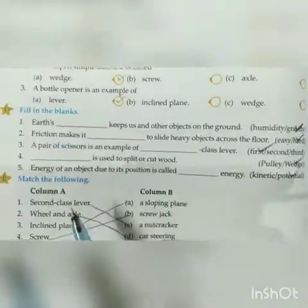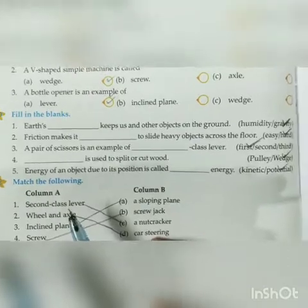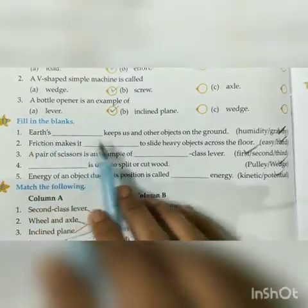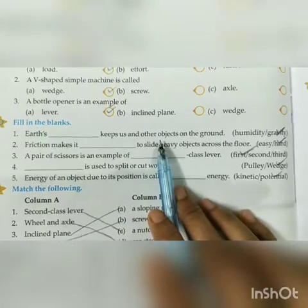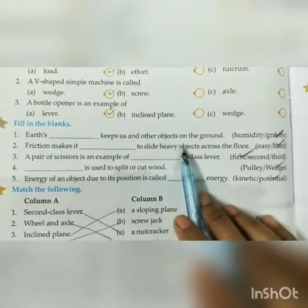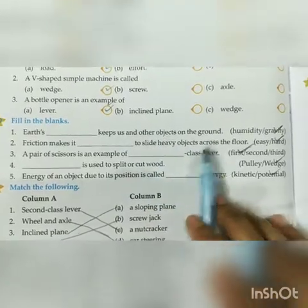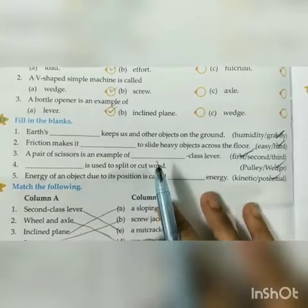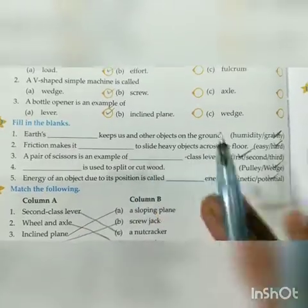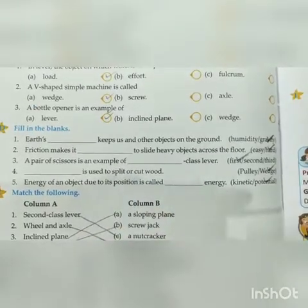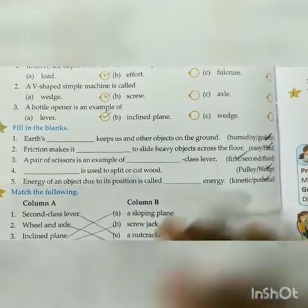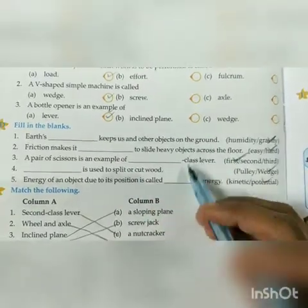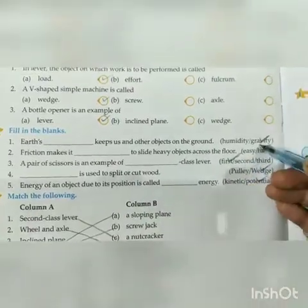Next, question number D — fill in the blanks. Earth's gravity keeps objects on the ground. What property of Earth attracts us toward the ground and keeps us attached? The answer is gravity.